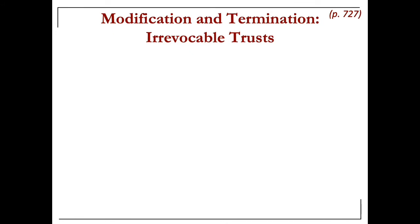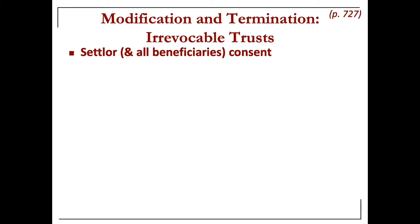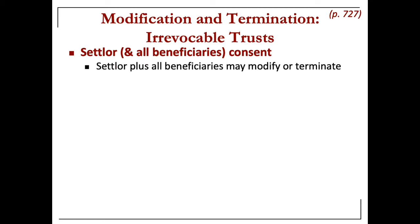For irrevocable trusts: if the settlor is alive and agrees to the modification, and all the beneficiaries agree, then the settlor plus all the beneficiaries may modify or terminate the trust. Notice the trustee does not have to agree — it doesn't matter what the trustee thinks as long as the settlor and all beneficiaries consent.